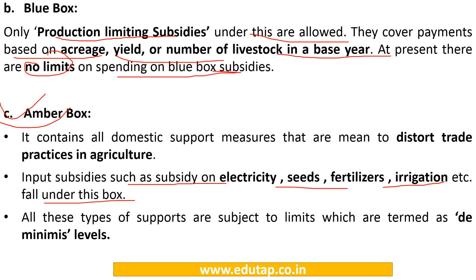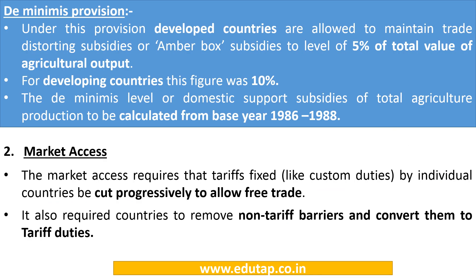Amber box subsidies cause trade distortion in the agriculture sector. Due to this, they are subject to limits known as de-minimis levels. Under the de-minimis provision, developed countries and developing countries are allowed to maintain Amber box subsidies to the level of 5% and 10% of total value of agricultural production respectively, which is calculated from the base year 1986 to 1988.